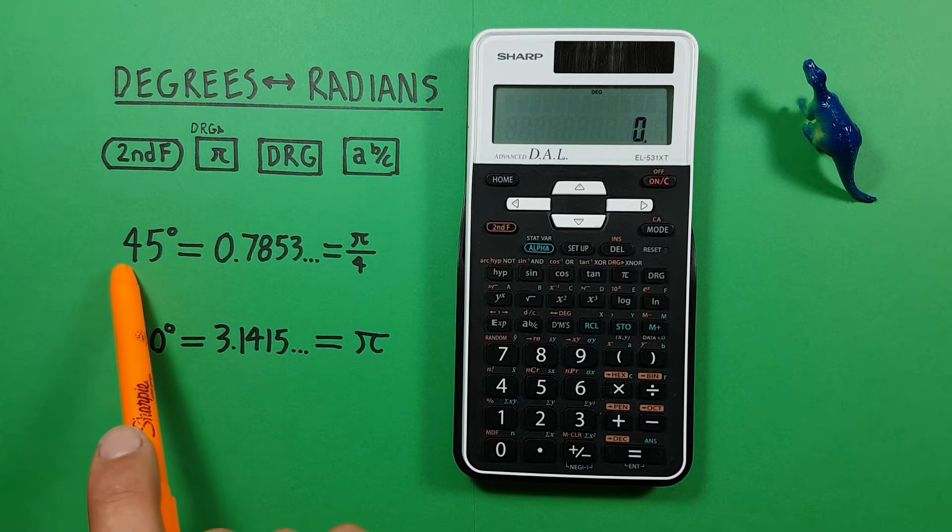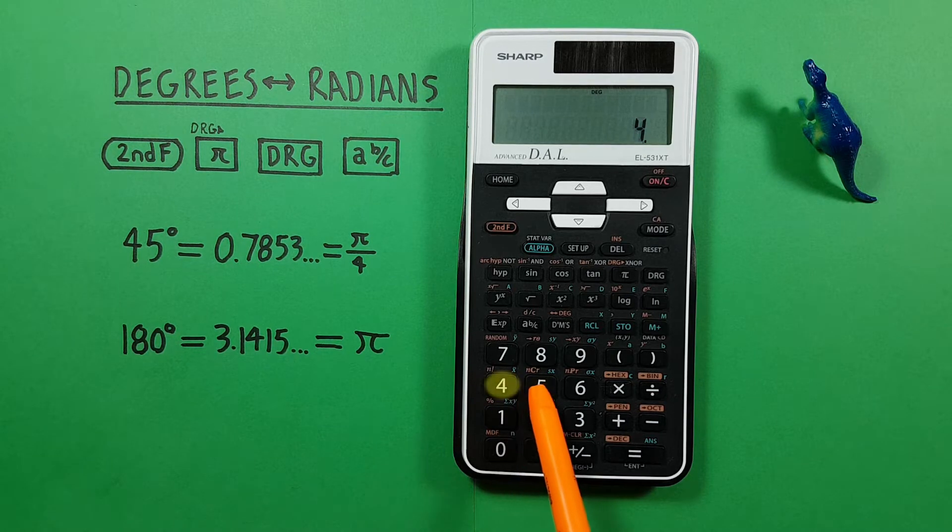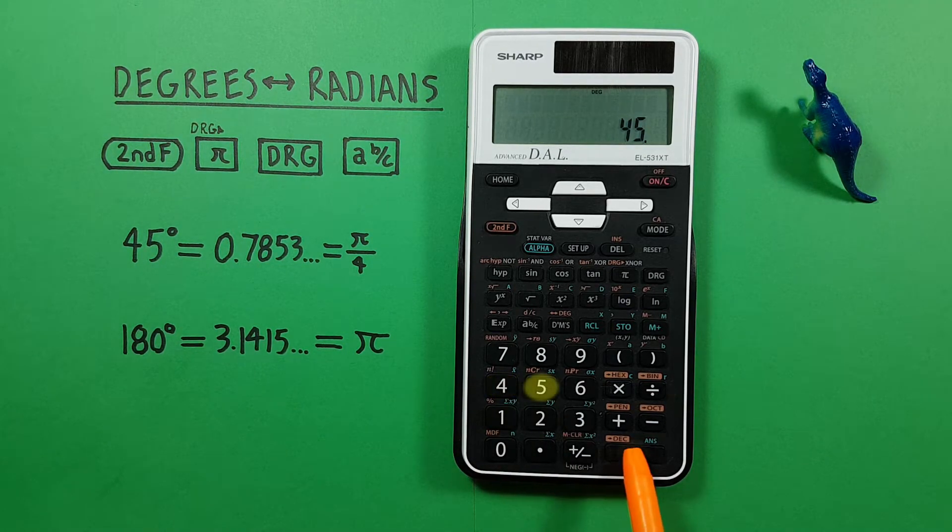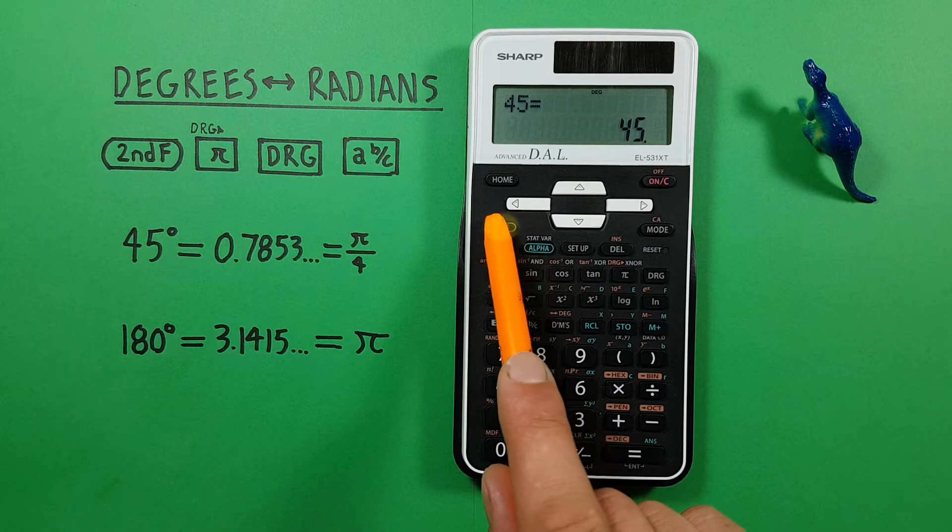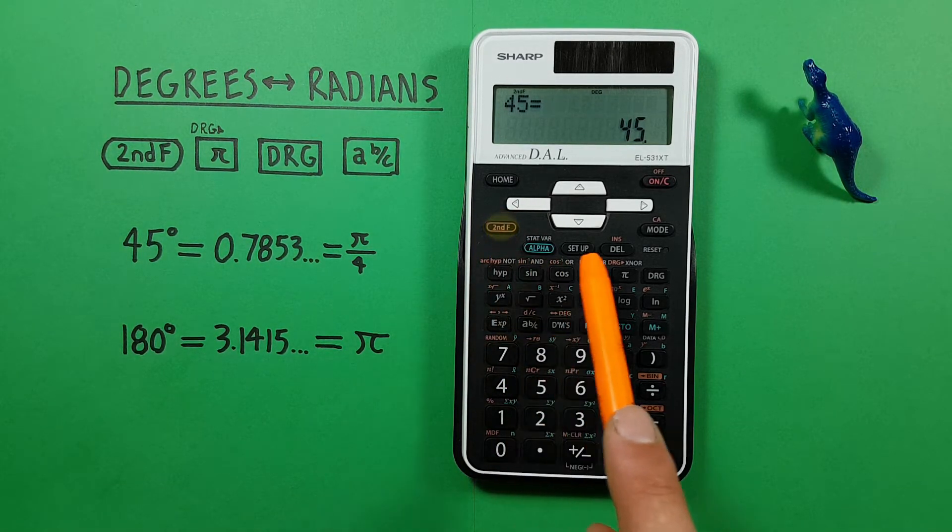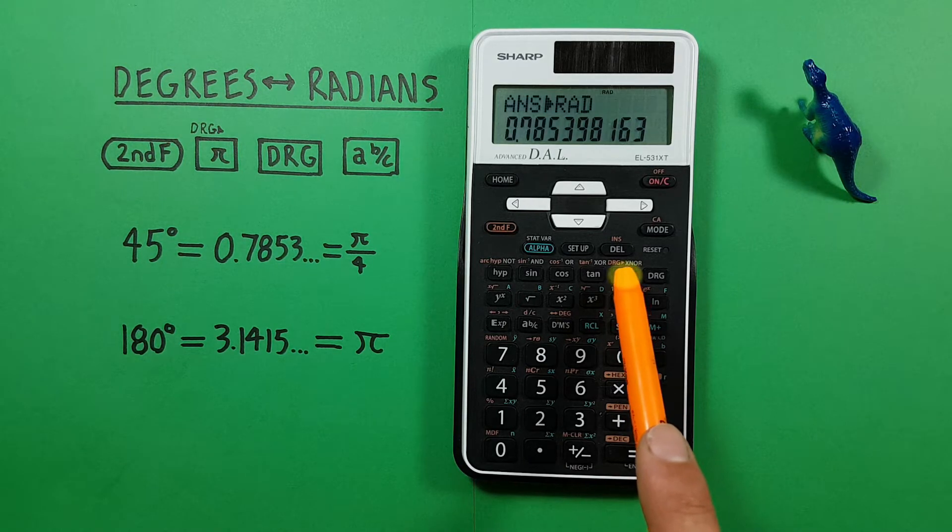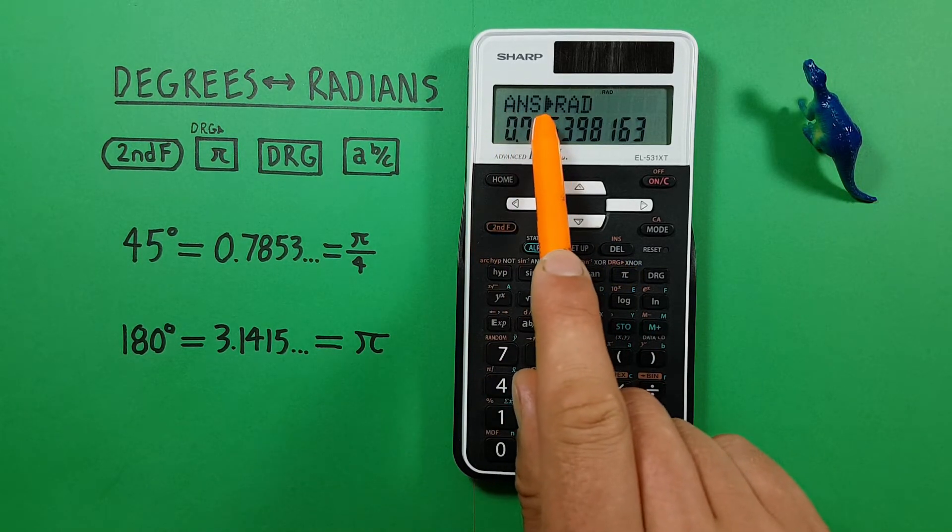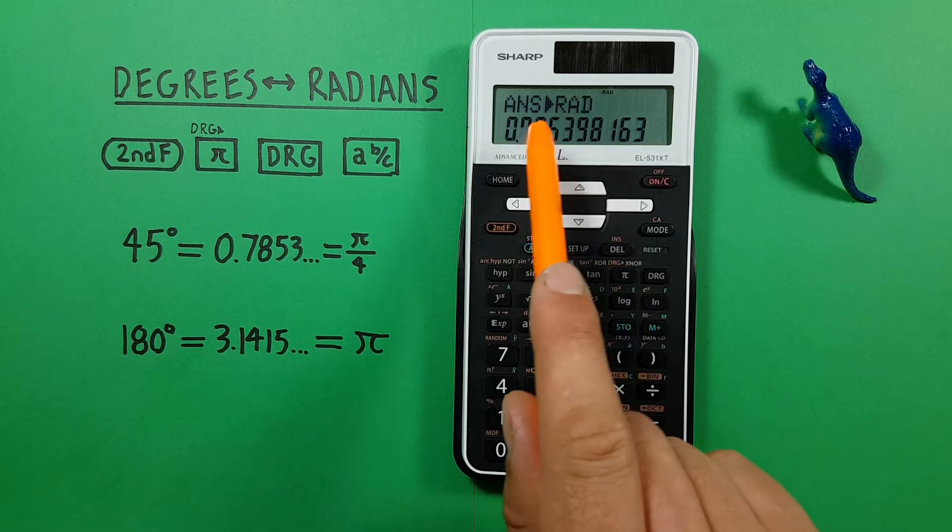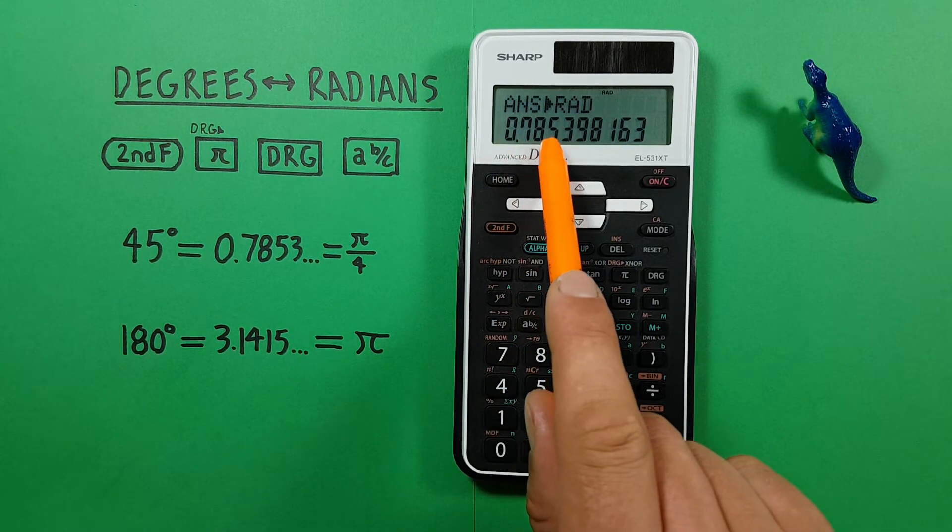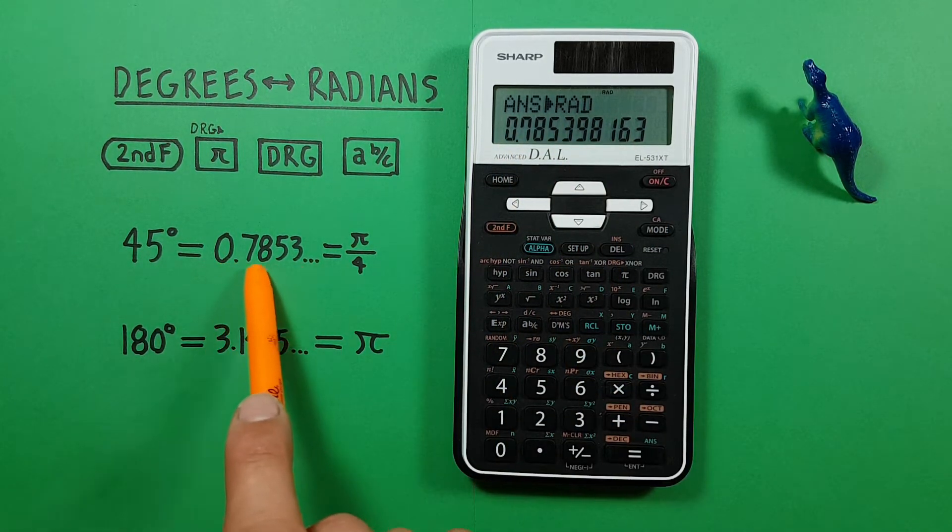Now we can enter our degrees. So 45. Now we can do our conversion. So we press second function and then the angle conversion key, which is the second function of pi. And here we see our answer into radians, which is 0.7853, etc. Like that.